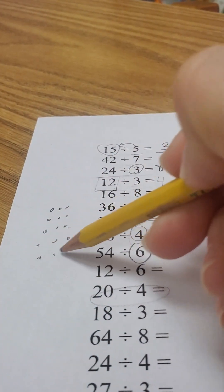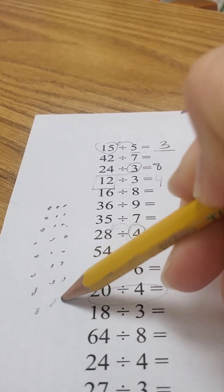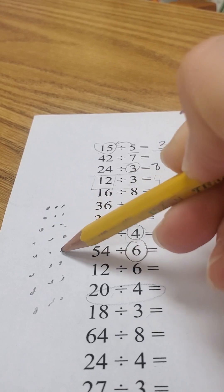This is 3, 6, 9, 12, 15, 18, 21, 24. There's 1, 2, 3, 4, 5, 6, 7, 8. 8 instances of 3 in the number 24.